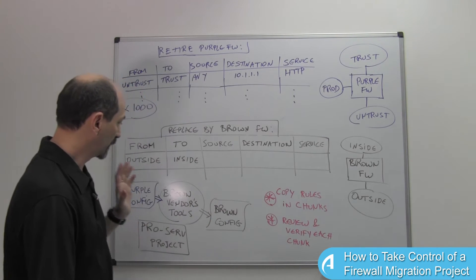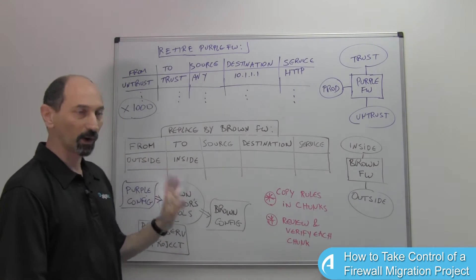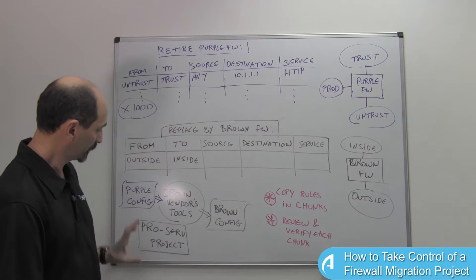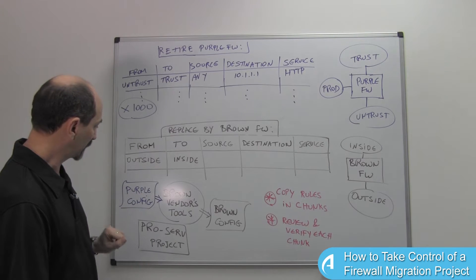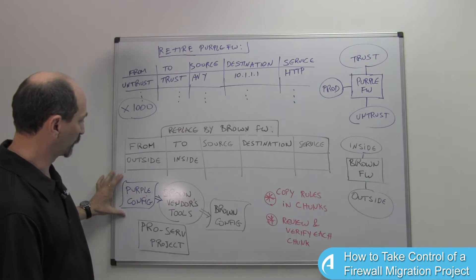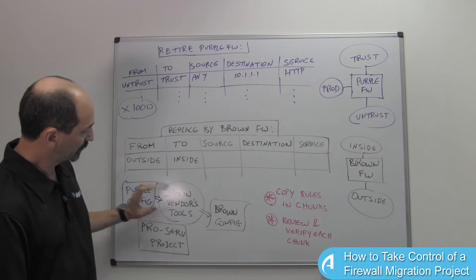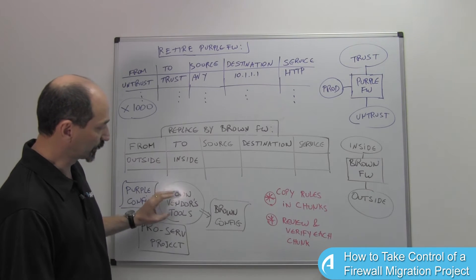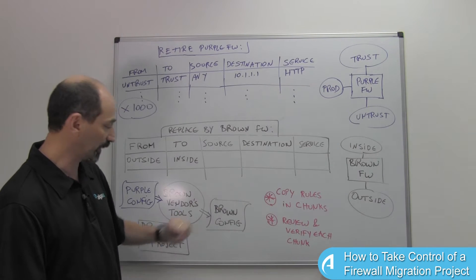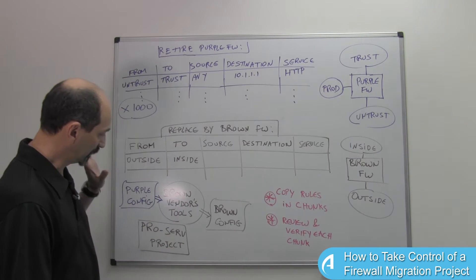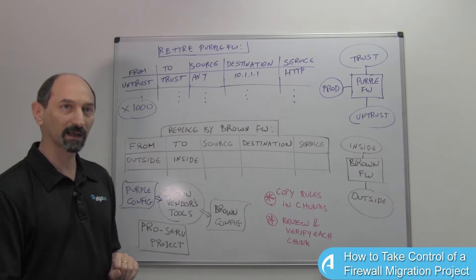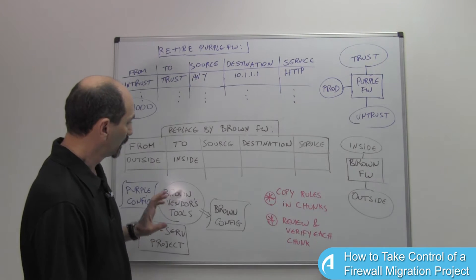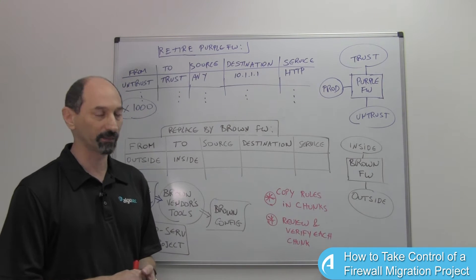The brown vendor's offer tells you that they have tools that can take the purple configuration, import them into the brown vendor's tools, and convert them magically into a brown firewall's configuration — all of this in one button click as part of a professional services project. And this is the offer that you have in front of you.